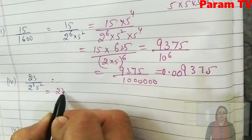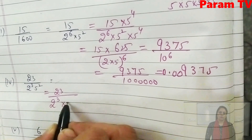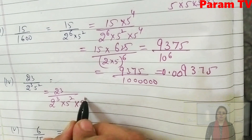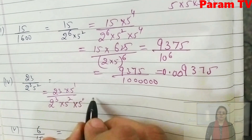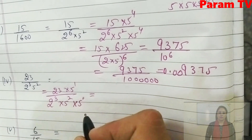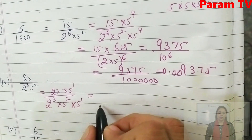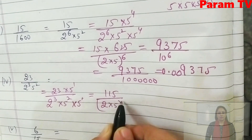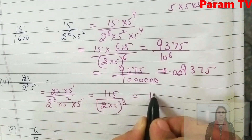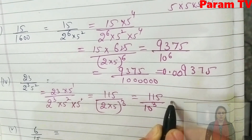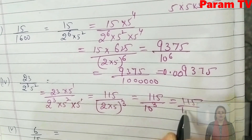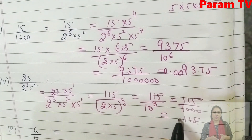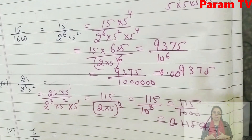Next is 23/(2³ × 5²). Here we need one more power of 5, so we multiply by 5¹. This gives 23 × 5 = 115 upon 2³ × 5³ = 115/10³. 10³ means 3 zeros, so count 1, 2, 3 decimal places from the right. That is the decimal expansion: 0.115.